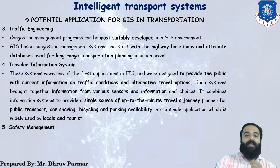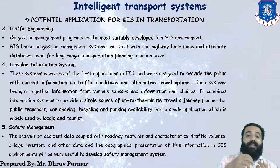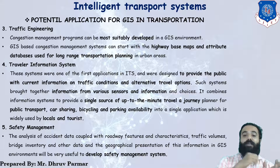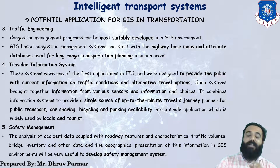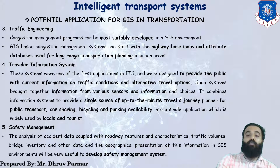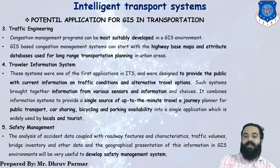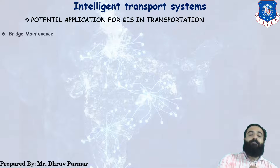The fifth application is safety management. In safety management, GIS analyzes accident data coupled with roadway features and characteristics, traffic volume calculations, bridge inventory, and other data. A geographical presentation of this information in a GIS environment is very useful for developing a safety management system. The traveler information system is combined with up-to-the-minute travel information, public transport, car sharing, bicycling, and parking availability.